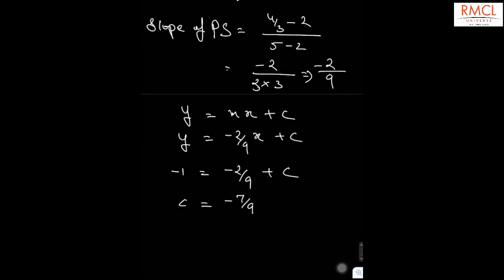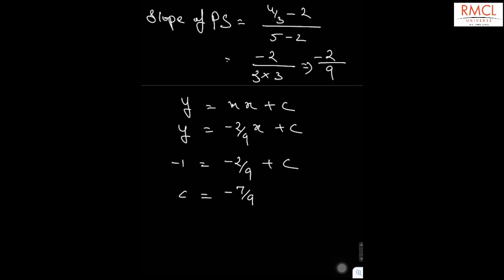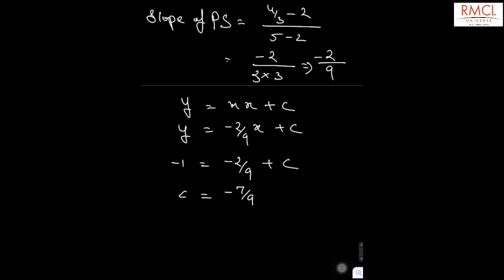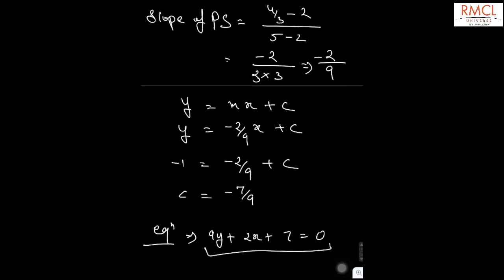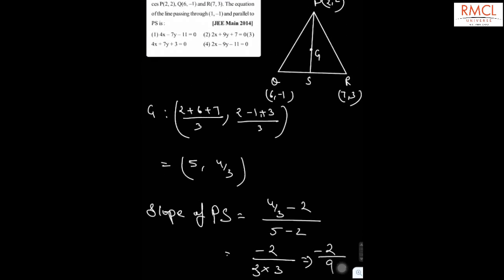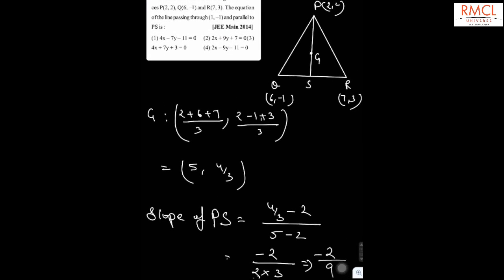With c = -7/9 and slope -2/9, the equation of the line works out to 2x + 9y + 7 = 0. So option number 2 is correct.